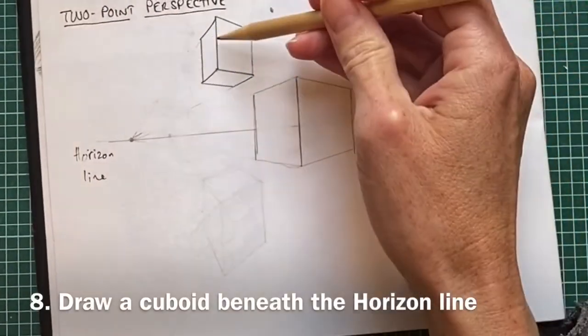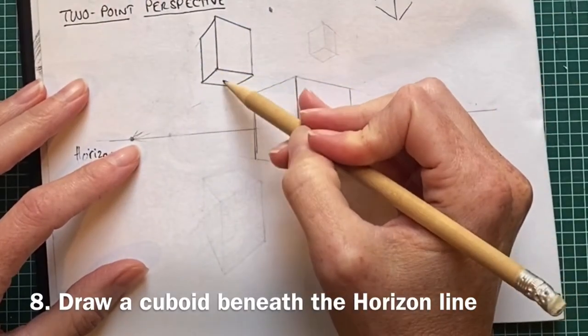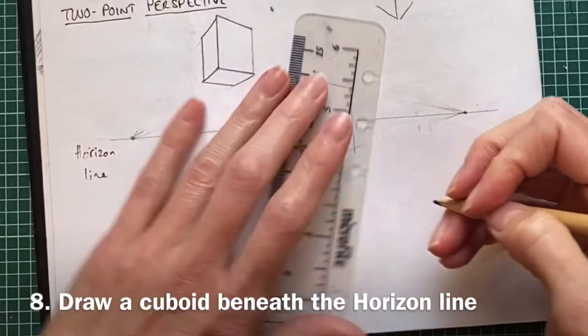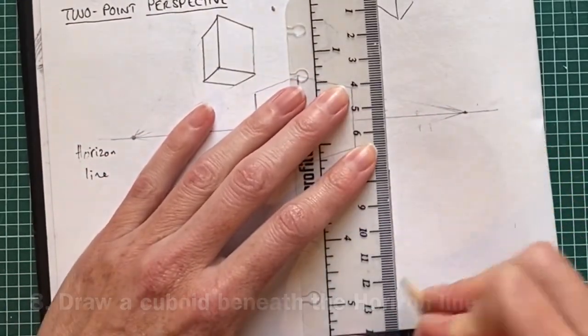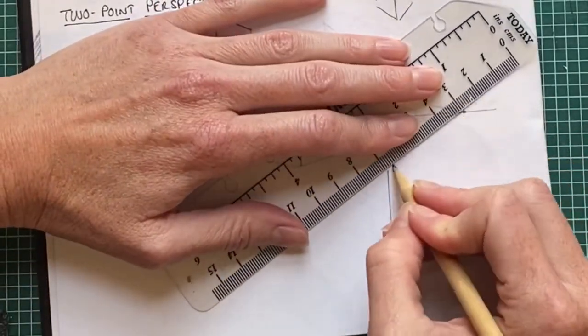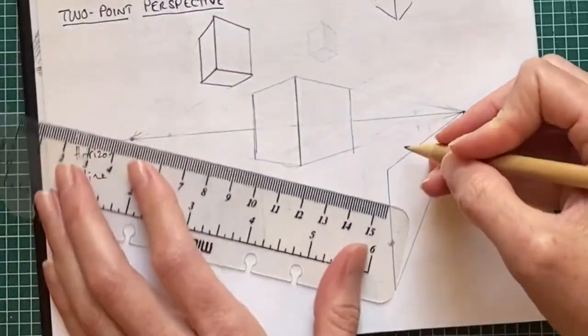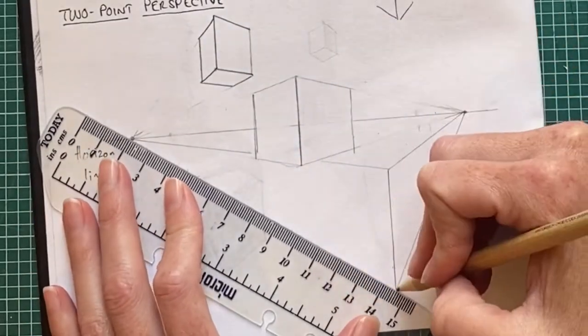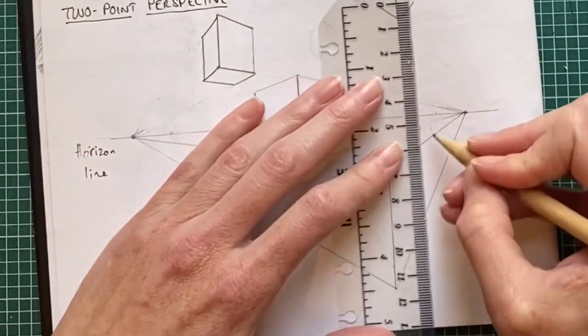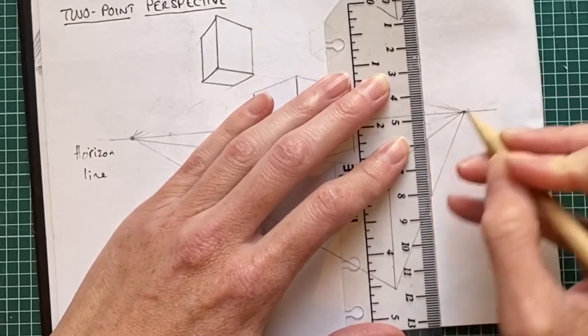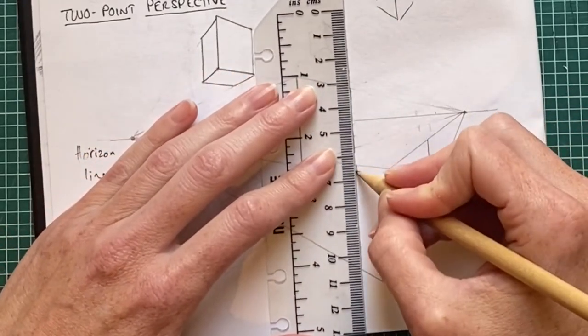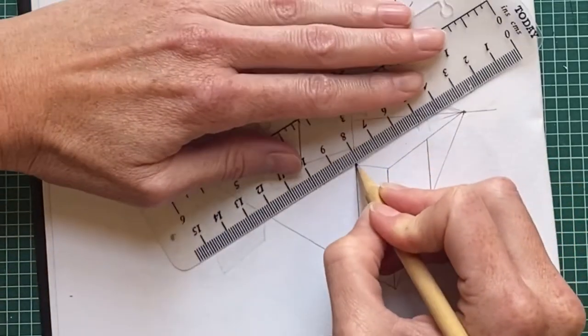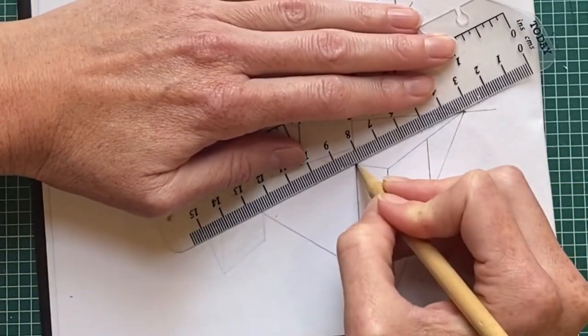Above the horizon, we're looking up at it, looking up at the base. On the horizon, we're going to do one now beneath the horizon line. To get the top of this, from each corner of the edge, I just need to join up to each vanishing point.